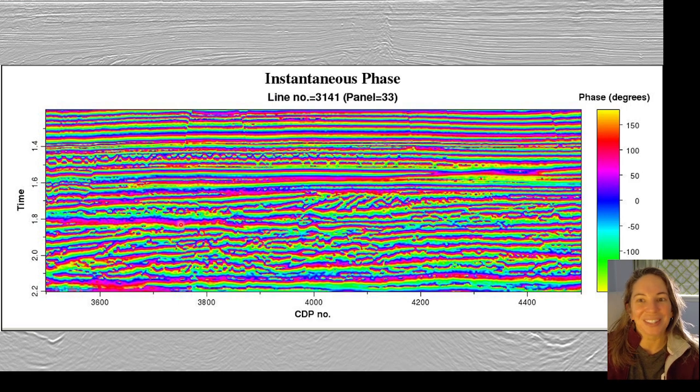Next up, we have our instantaneous phase, which ranges from negative 180 to 180, so it's one of those cyclical attributes that we really want to be careful of if we're going to be putting our seismic attributes into machine learning.